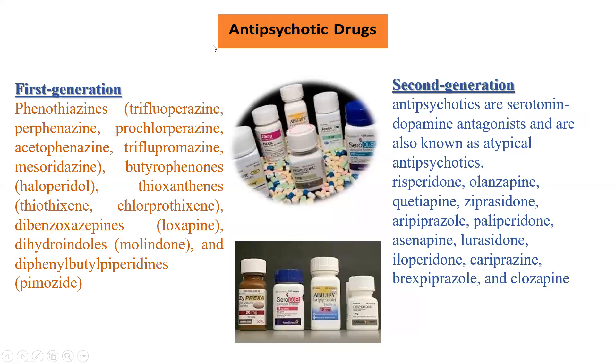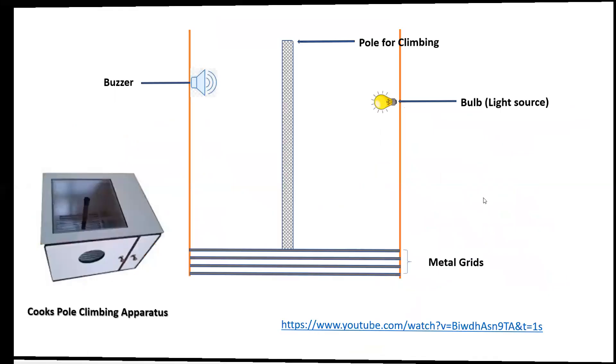These are some drugs which are used as antipsychotics, first generation and second generation drugs which are available in the markets. Now this screening method is useful when you have a new potential compound which has to be predicted as antipsychotic, anxiolytic, or sedative hypnotic. You can go with this type of test. So it is a preclinical screening test.